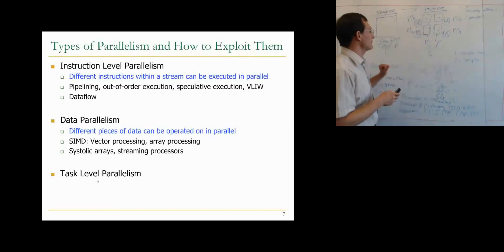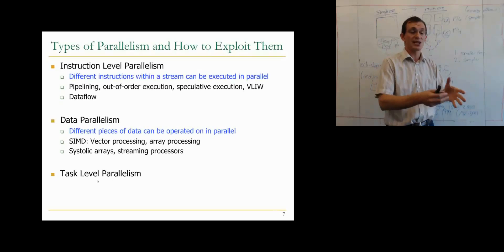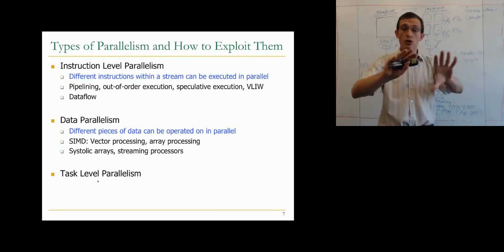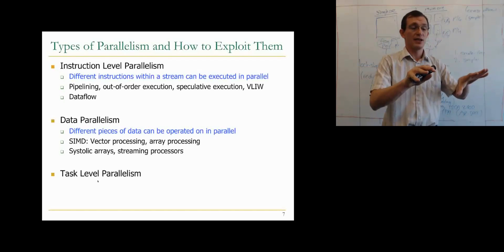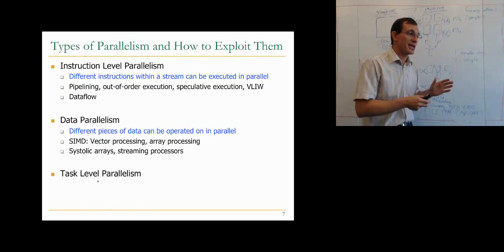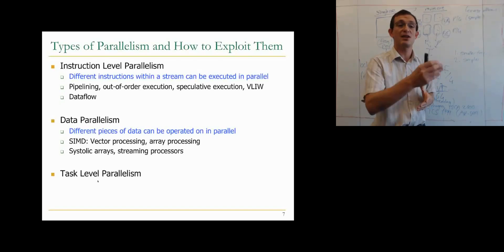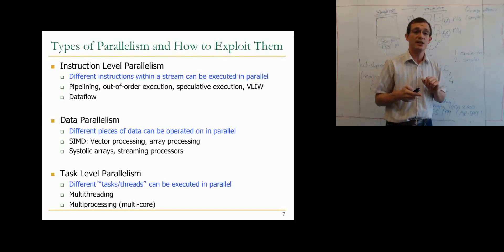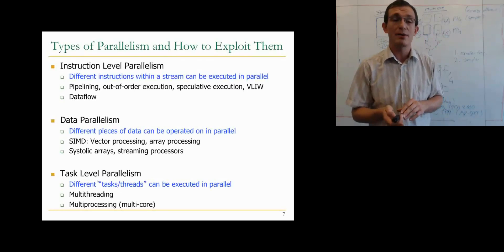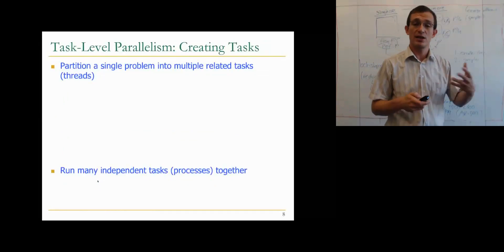Data parallelism is another type — different pieces of data operated on in parallel. This is SIMD: vector processing and array processing are examples. When adding two matrices, all additions can be done in parallel with a single instruction. Systolic arrays and streaming processors also exploit data parallelism by pumping data elements into the array to be processed in a streaming manner. Finally, task-level parallelism — different tasks or threads (units of instructions) executed in parallel — is exploited by multi-threaded processors and multi-core processors.